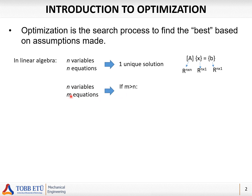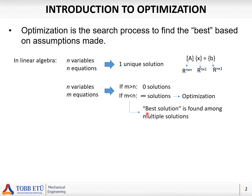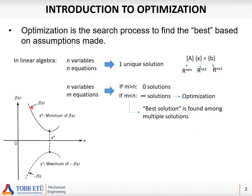But if we have n variables and m equations and those are different, we have two cases. If the number of equations m is greater than the variables n, we will have zero solutions — more equations and fewer variables gives no solution. On the contrary, if the number of equations m is smaller than the number of variables n, we will have multiple or infinite solutions. In this scenario we can use optimization to find the best solution among these.